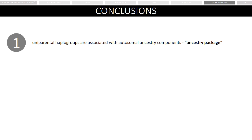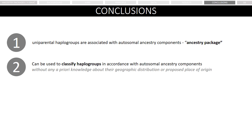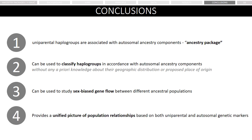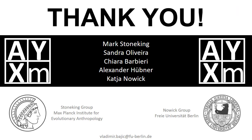With this, I would like to conclude that highly associated uniparental lineages and autosomal ancestry components could be seen as ancestry packages; that the Ancestry Packages approach can be used to classify haplogroups in accordance with autosomal ancestry components without a priori knowledge about their geographic distribution; that this approach is very useful in studying sex-biased admixture; and that the Ancestry Packages approach provides a unified picture of population relationships accounting for both uniparental and autosomal genetic markers. Thank you very much for your attention.